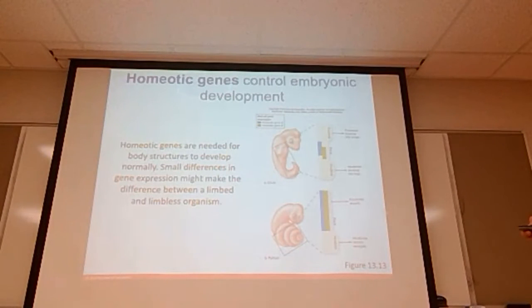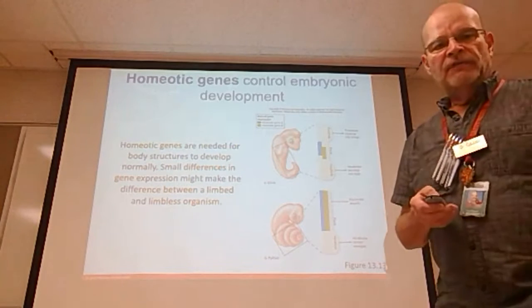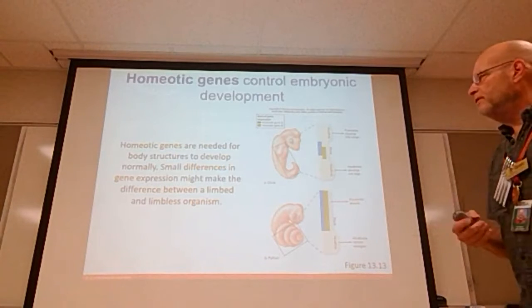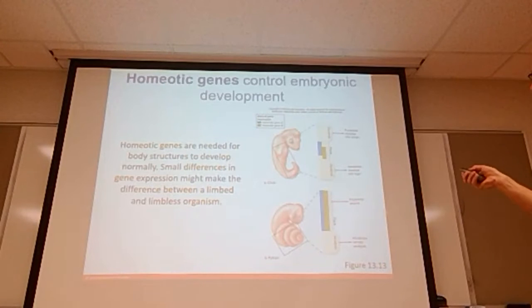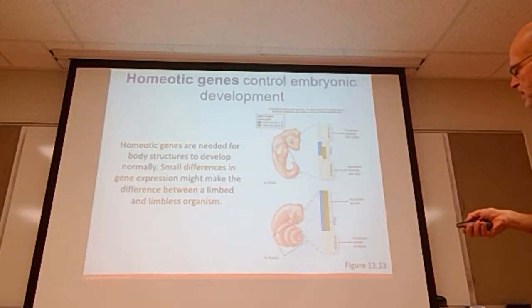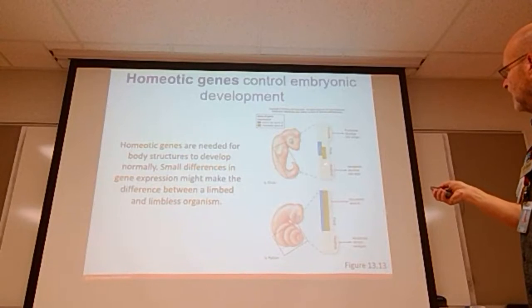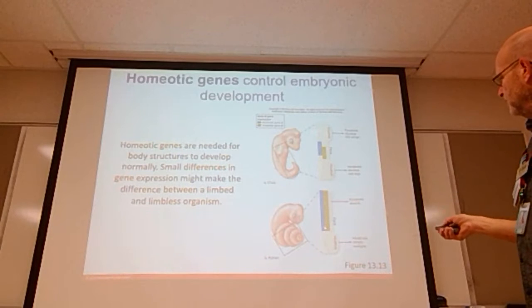Homeotic genes control embryological development. We talked about homeotic genes before — they're needed for body structures to develop normally. A very small difference in gene expression may make a very large difference in the way an organism grows, such as having limbs or not having limbs. Here's the baby chick showing four-limb development signals, and here's the python — it will continuously form a tail structure, whereas the chick's tail stops and four limbs form.